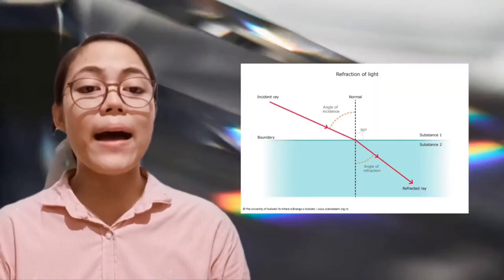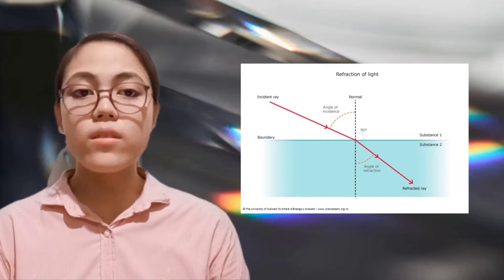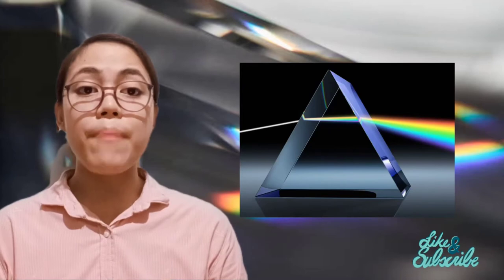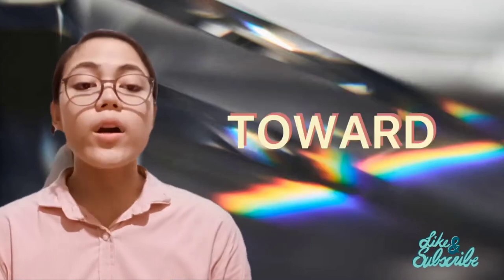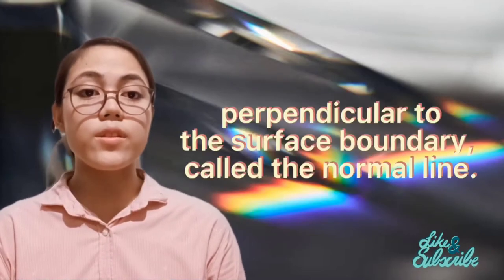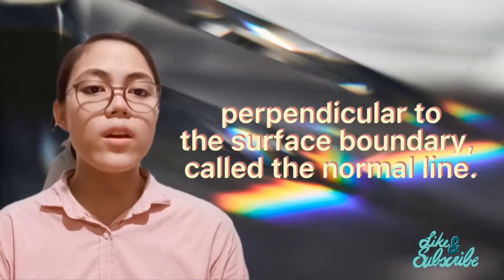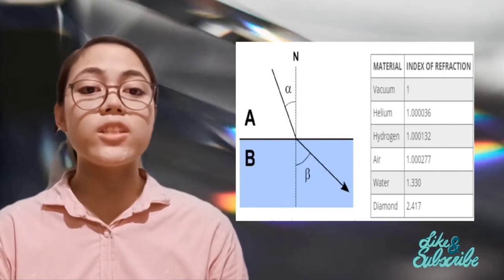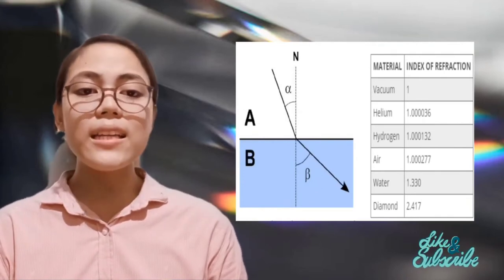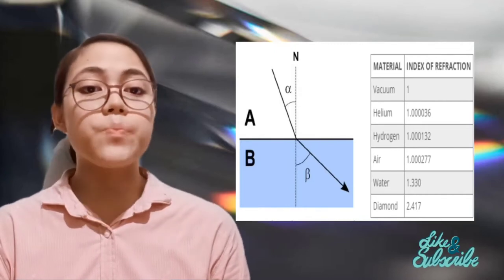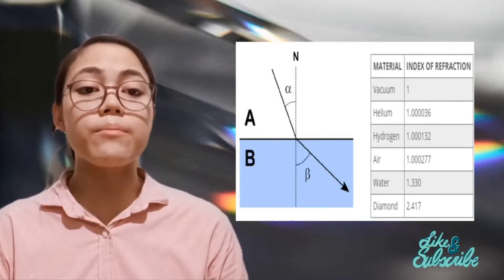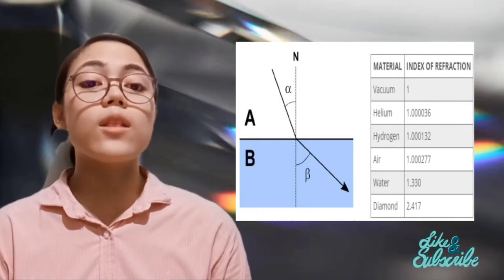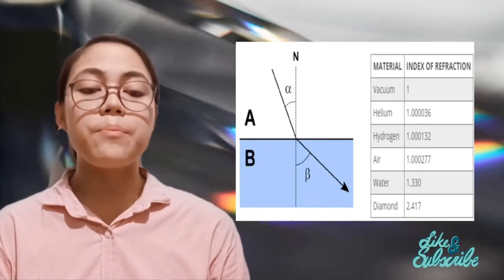Light is slowed down as it passes through objects or materials. The slowing down of this light causes it to bend. As light passes from one medium to another, it bends either toward or away from an imaginary line perpendicular to the surface boundary called the normal line. Light will bend toward or away from the normal line depending on how the light changes speed. If the light is passing through a medium boundary and speeds up, it will bend away from the normal line. Oppositely, the light will bend toward the normal line if it is slowing down as it passes the medium boundary.